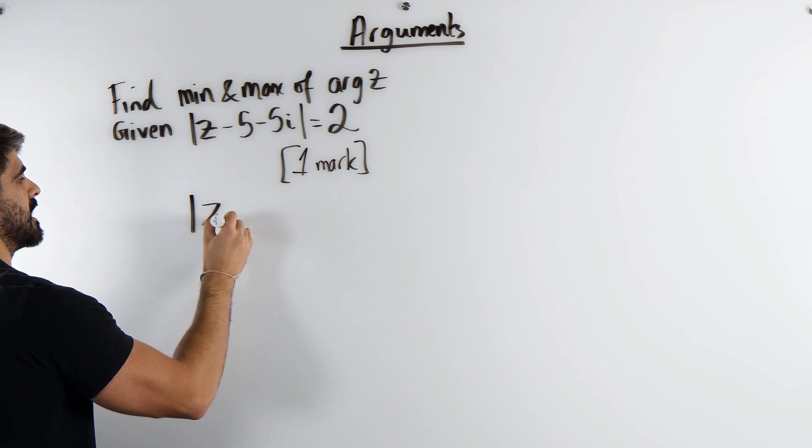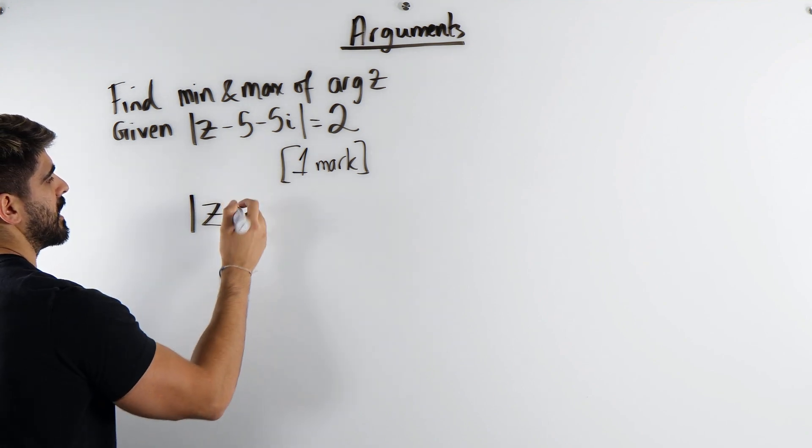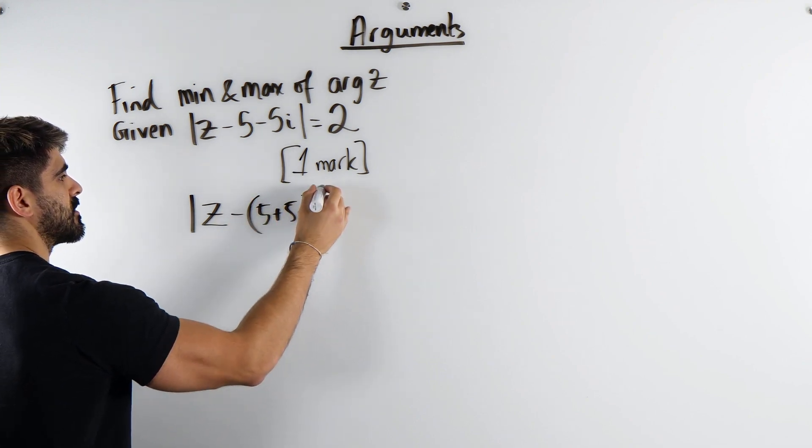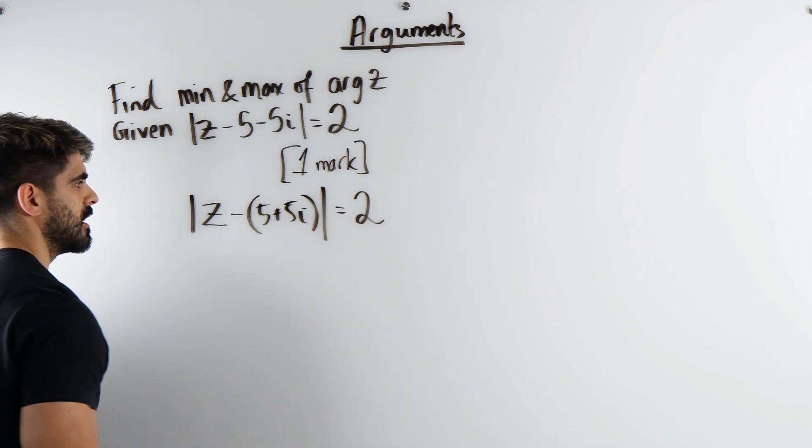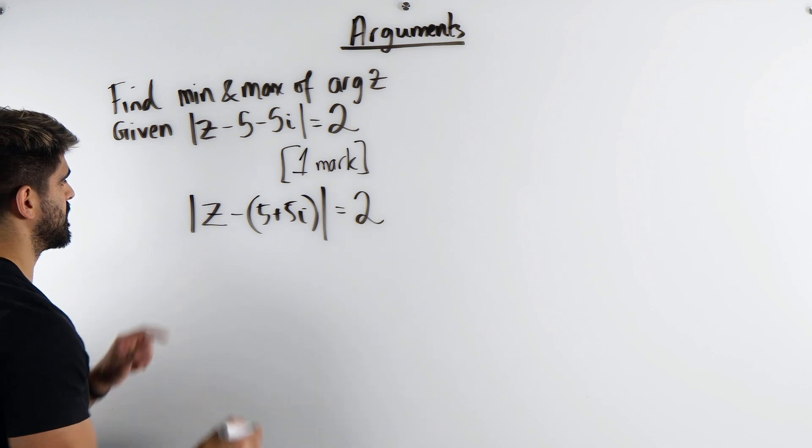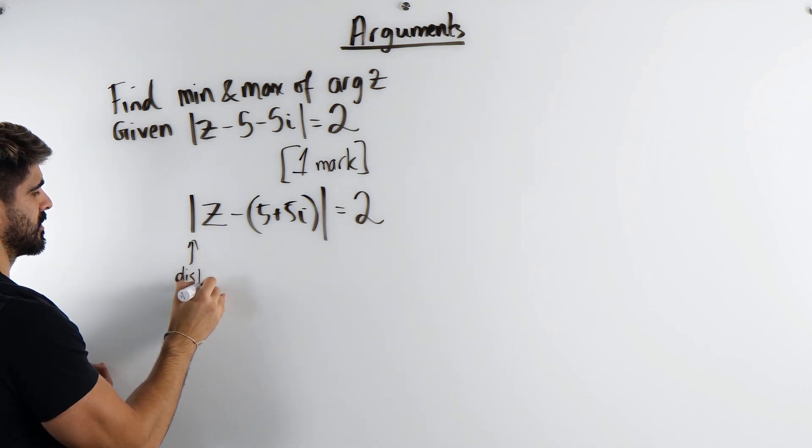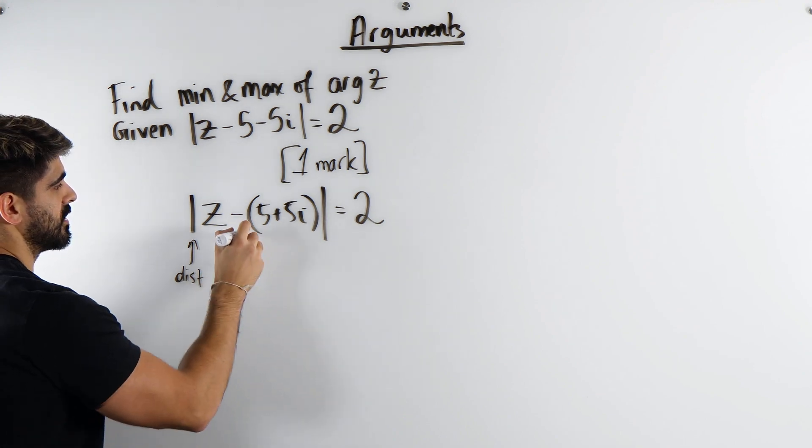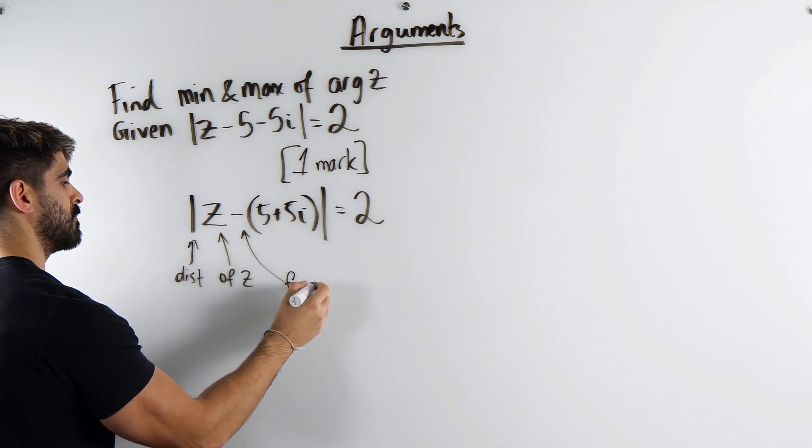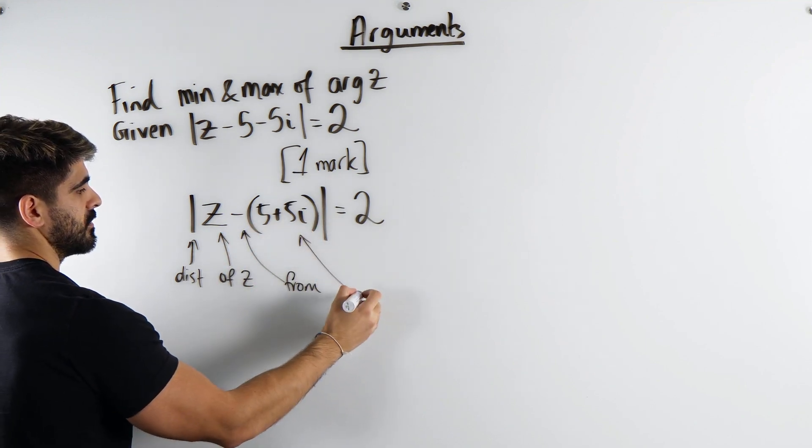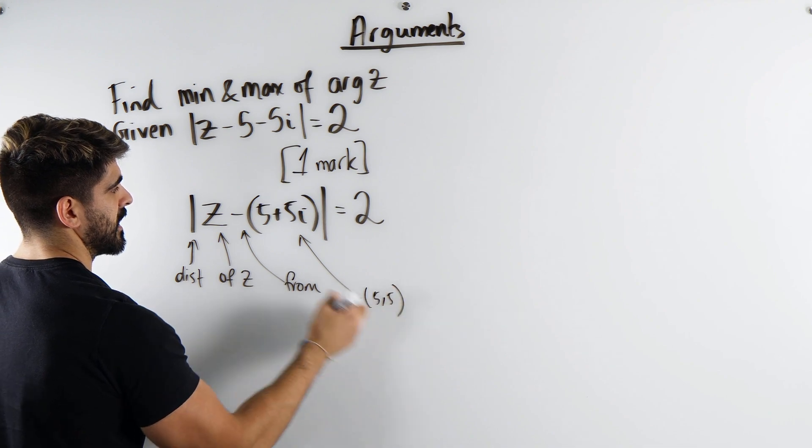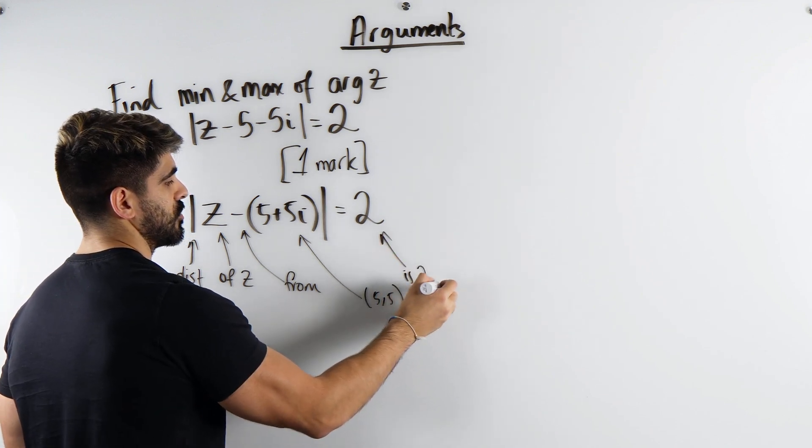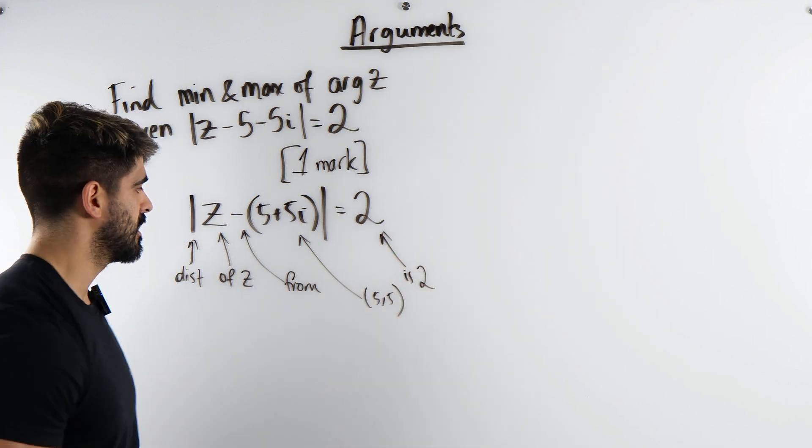We're saying modulus z, now we should be factorizing out a minus. When we take out that minus this says the distance, it's the distance of z, your point z from this coordinate 5, 5, yes 5 on the real axis, 5 on the imaginary axis is 2. That's how I want you guys to be reading this statement.